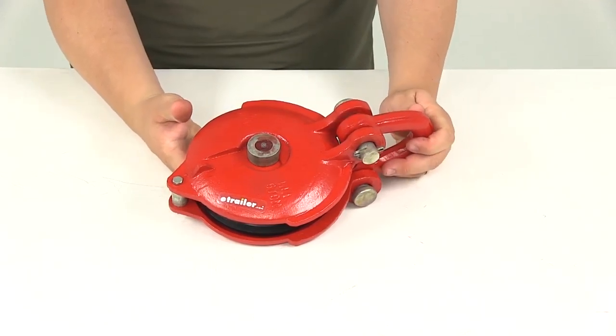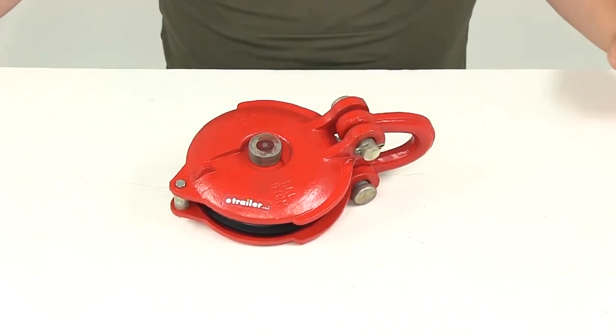That's going to do it for our review of part number BDW20028. This is the Bulldog Pulley Block.